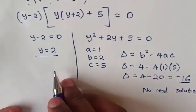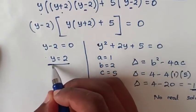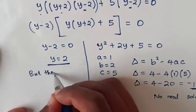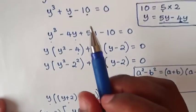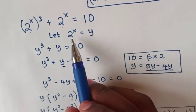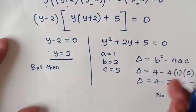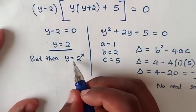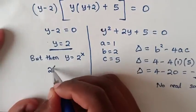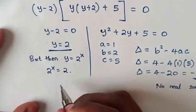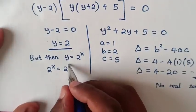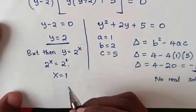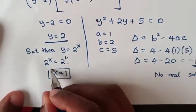Since the second case gives no real solution, we continue with y equals 2. We let 2 power x equal to y, or y equals 2 power x. From y equals 2, then 2 power x equals 2. Since 2 is the same as 2 power 1 and we have the same base, we compare the powers: x equals 1. This is the final value of x.